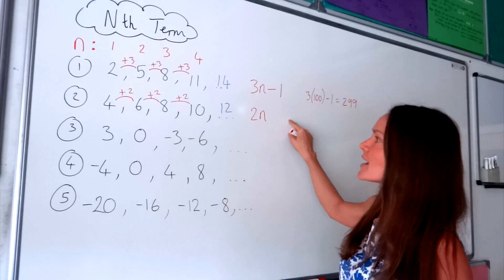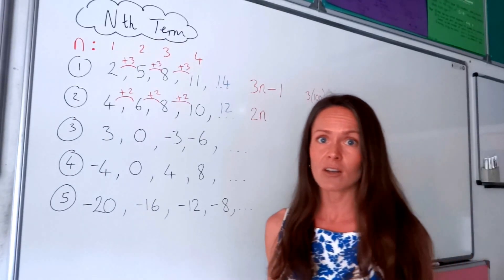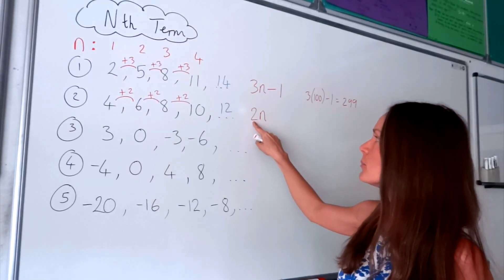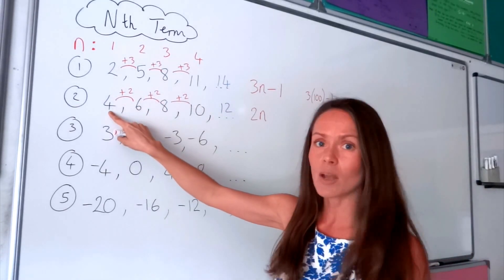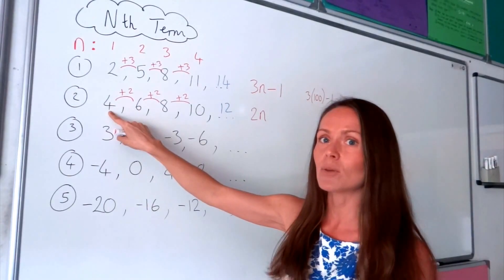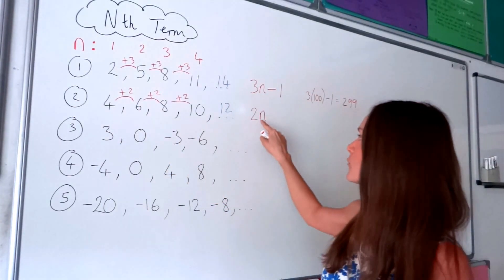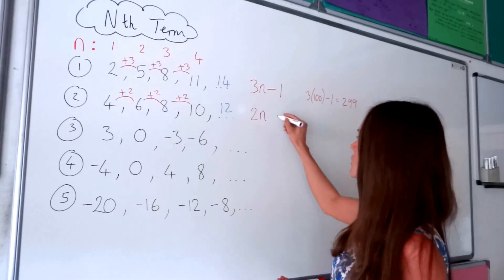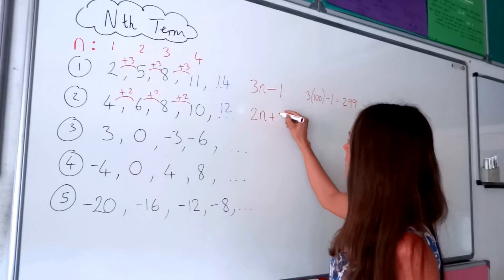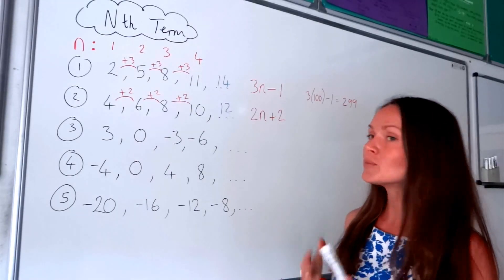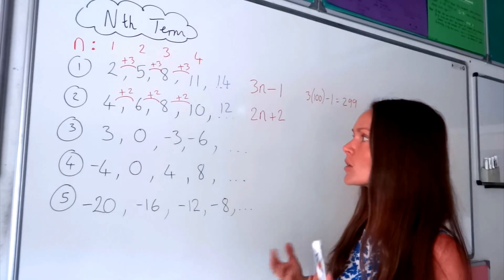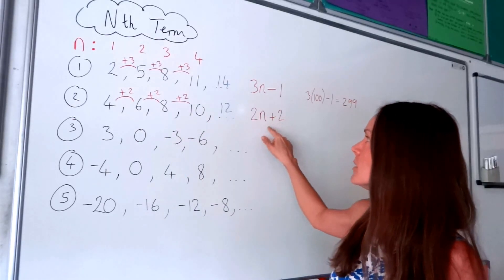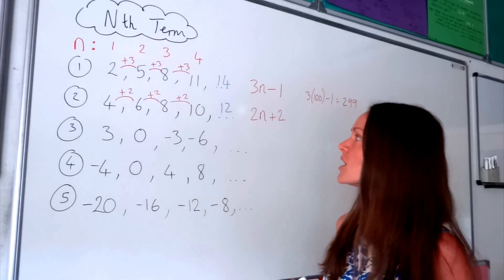To find the next part of the formula, the question you have to ask yourself is: how do I get from the number 2 to the first number in the sequence? To get from 2 up to the number 4, I have to add 2. So that gives me the rest of the formula: 2n plus 2. I'm going to check that it works by testing a few numbers from this sequence.